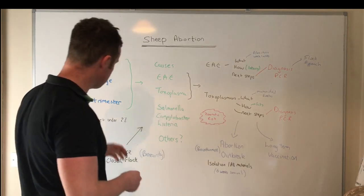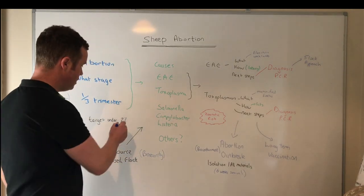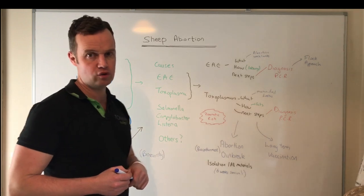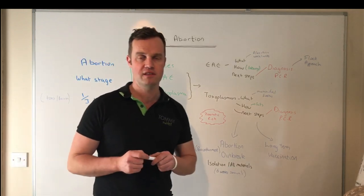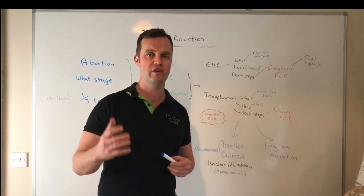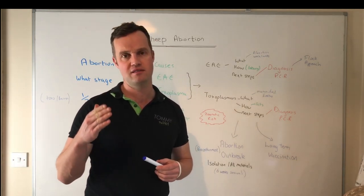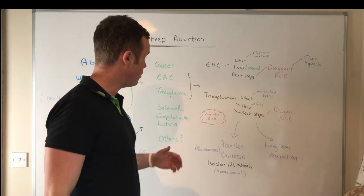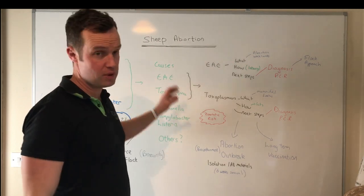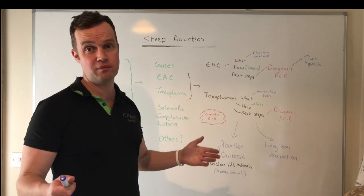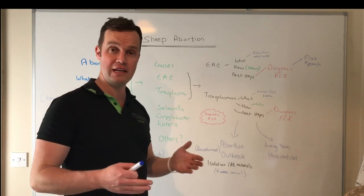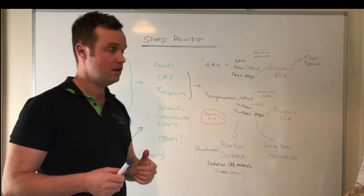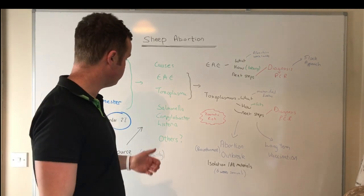So what's your target for abortions on your farm? We want to be under two percent. You will occasionally have ewes slipping lambs, but anything over that there's something going on - that's the threshold we want to have in most people's heads. Abortion outbreaks can cost anything up to a hundred euro per ewe in losses, so we really want to get a handle on that.